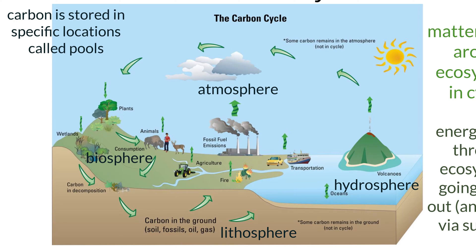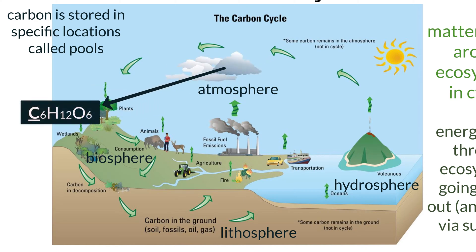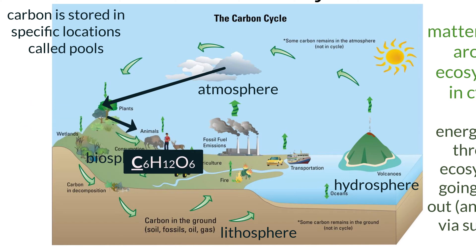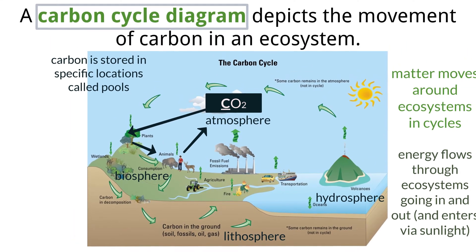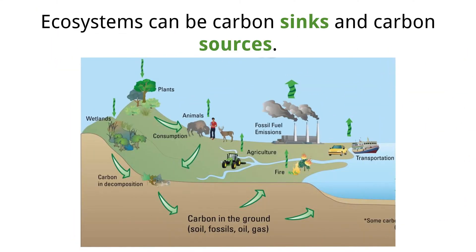Carbon exists in the atmosphere as gaseous carbon dioxide. It can be taken in by plants via photosynthesis, in which it is converted into glucose or other carbon compounds. Animals can feed upon the plants, taking those carbon compounds and storing them in their own tissues. The carbon compounds can then be used for cell respiration, which breaks them down and produces carbon dioxide. This carbon dioxide is a waste product, so consumers release it through respiration, putting it back into the atmosphere and completing the cycle. Be sure to understand how to interpret and create carbon cycle diagrams for the exam.